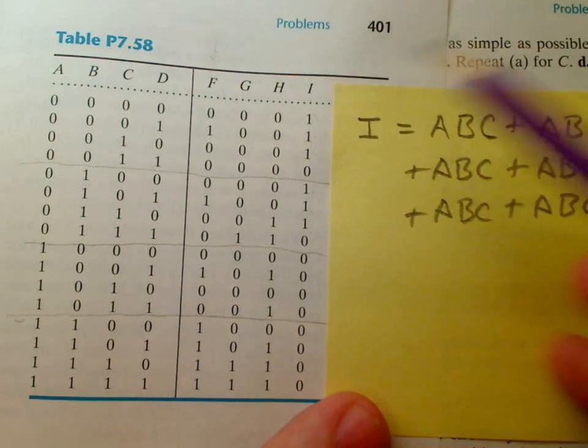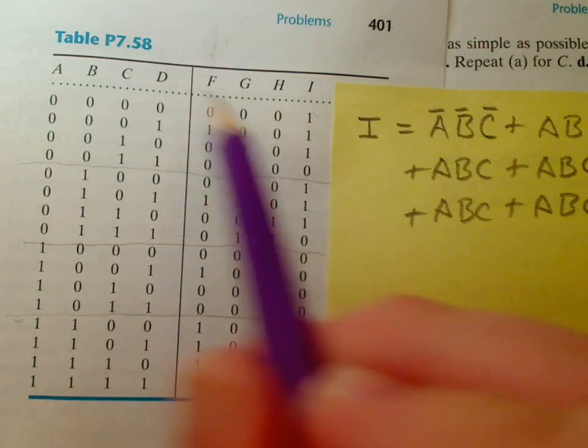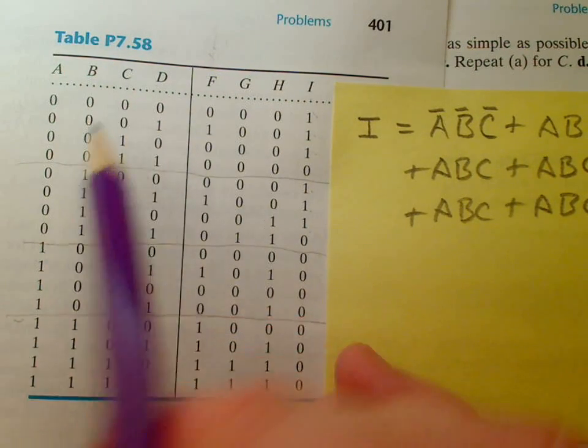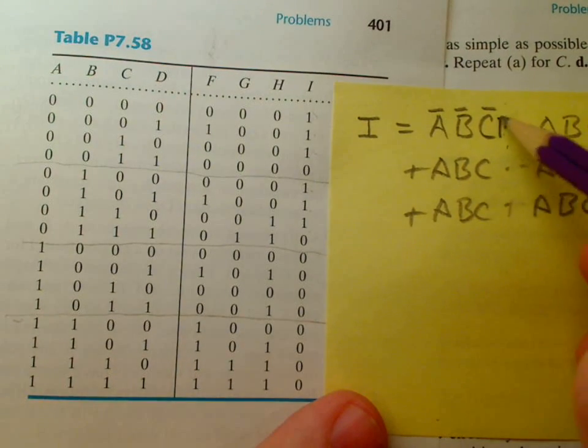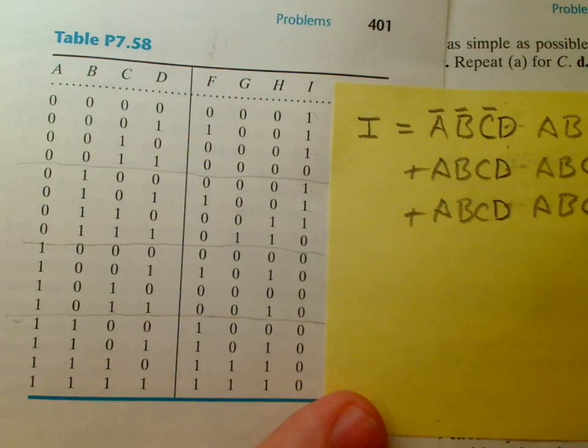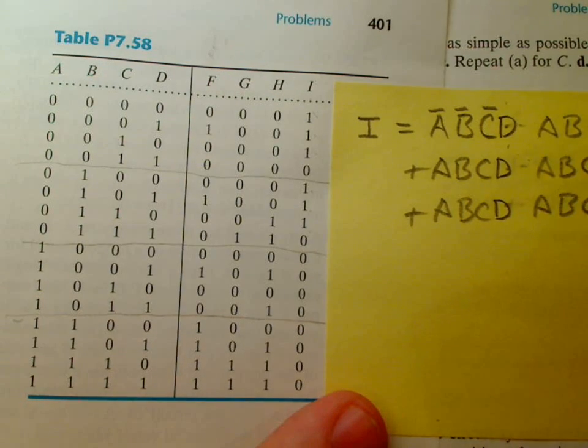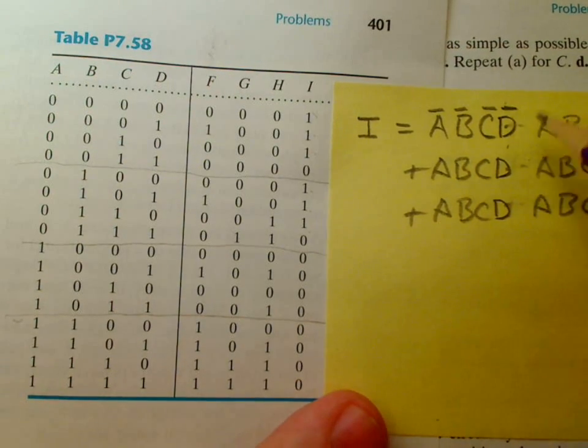We notice that the first term has A, B, and C all off. Oops, looks like I left something out there, there are four terms in this one, so I need to put a D in each one of these, so D is off as well.